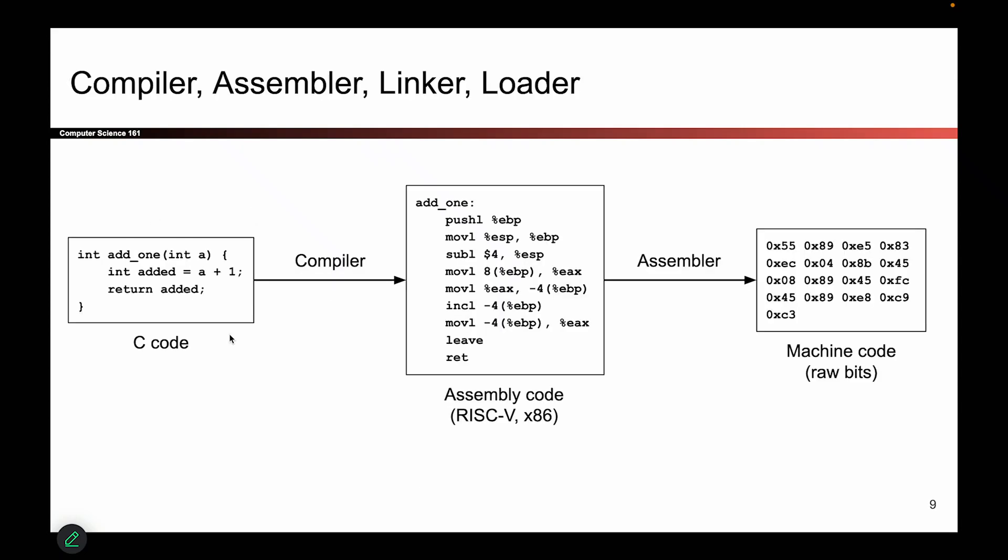This might be something familiar from CS61C. If it's not, we'll give you a quick summary. Basically, the way your computer is going to run a program is you start with some C code. There it is, I wrote my C code. The compiler will take your C code and translate it to a lower level language called assembly code.